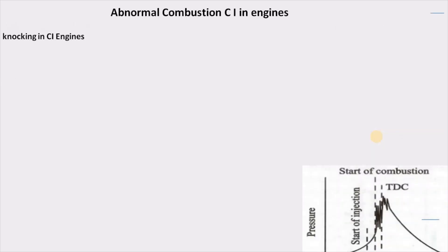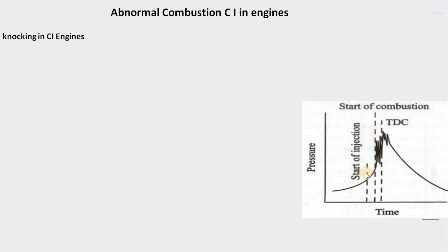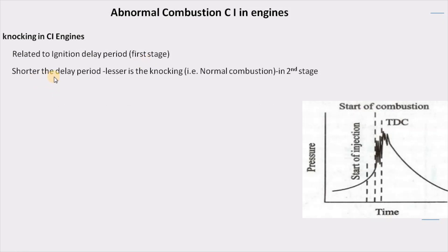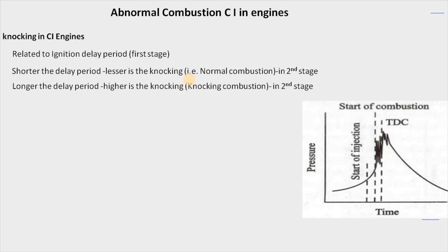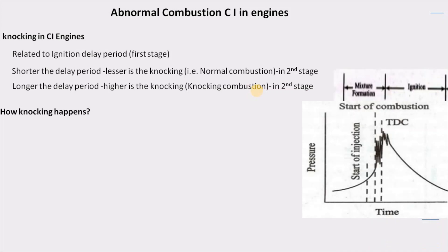Now let us understand abnormal combustion in CI engines, which we call knocking. The knocking or abnormal combustion in a CI engine is related to the ignition delay period — the first stage. Shorter the ignition delay period, lesser is the explosion due to auto-ignition, and we call that normal combustion. On the other hand, if the delay period is longer, the explosion due to auto-ignition is higher and we call it knocking combustion.